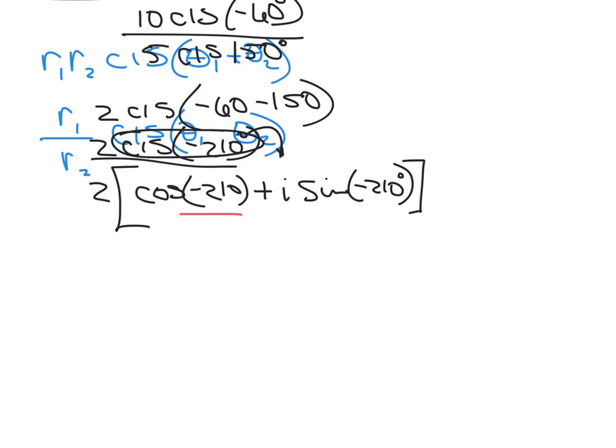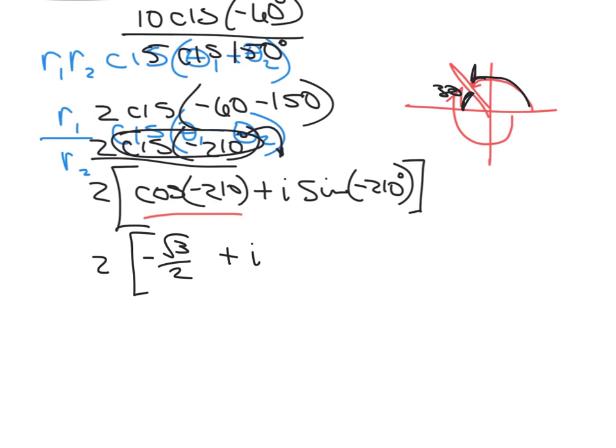We're going to take the cosine of negative 210. Negative 210 is going to be over here somewhere. That's negative 210, so this is going to have to be 360 minus 210, which is a 150 degree angle, which makes this one a 30 degree angle. So then I go 2 times negative square root of 3 over 2, plus i sine of negative 210, which is going to be 1 half because it's that 30 degree angle again.